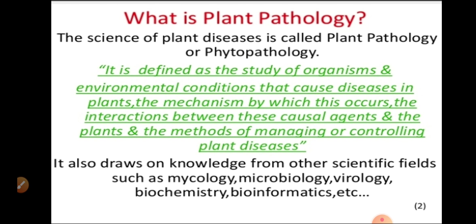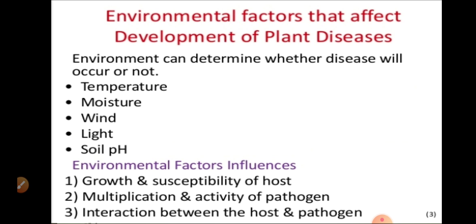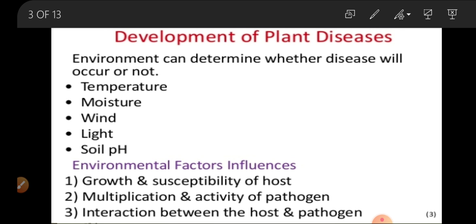Now we can see in this slide the environmental factors that affect the development of plant diseases. Environment can determine whether disease will occur or not. These factors include temperature, moisture, wind, light, and soil pH — these are the environmental conditions which affect the development of plant diseases.